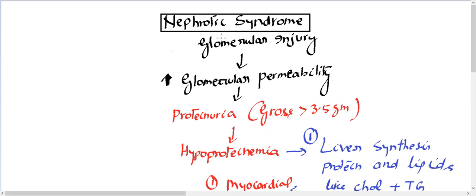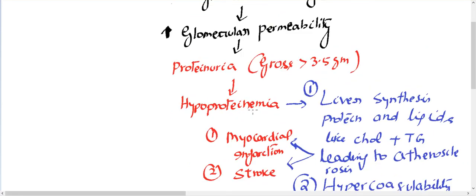Okay, so for the purpose of USMLE guys, you should know the differentiating point between nephrotic and nephritic syndrome. Because it is a gross proteinuria, more than 3.5, the body is losing protein. As a result there is hypoalbuminemia.